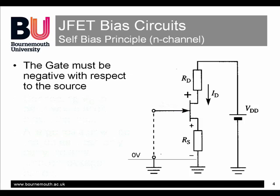Assume for a moment that the JFET is on and taking a drain current ID. If the supply voltage is 12 volts, then the drain would ideally be around 6 volts, with 6 volts dropped across the drain resistor RD. The drain current will also pass through the source resistor RS and drop a voltage which is typically around 1 volt or so, giving us the potential gradient shown here in the slide.